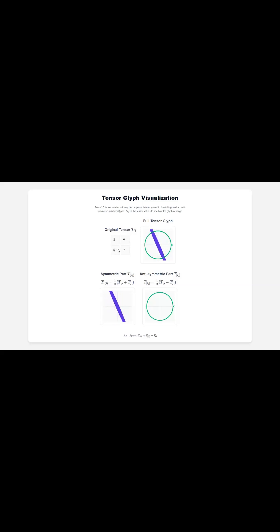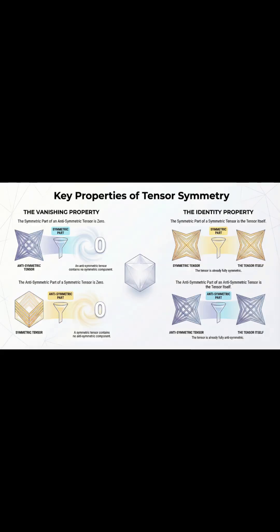First, let's talk about the math. There are these two key identities that really clean things up. The symmetric, or stretching, part of a purely rotational tensor, it's zero. It just vanishes. And the same thing happens with the rotational part of a purely stretching tensor. It shows these two actions are fundamentally independent.